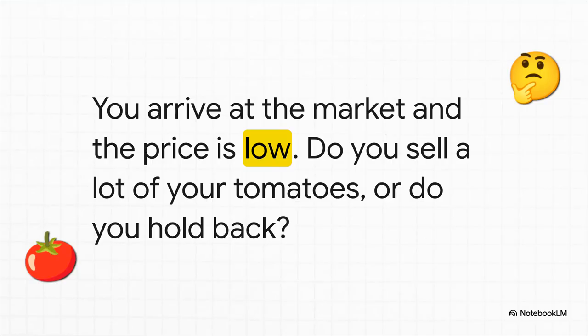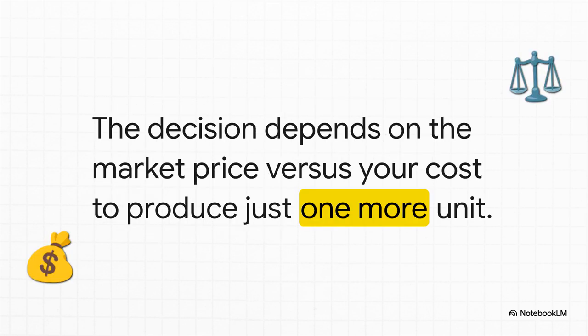Picture this: you're a tomato farmer. You've worked hard, you've got a truck full of beautiful tomatoes. You get to the market, you check the board, and the price for tomatoes is low today. Your gut says to hold back — you don't want to sell everything for a bargain basement price. But what if the price was crazy high? Then you'd be trying to sell every last tomato you've got. Here's the key: your decision isn't just about what the market is willing to pay. It's all about how that price compares to your cost — specifically, how much it costs you to produce that very next tomato. This one little idea is the key to unlocking this entire concept.